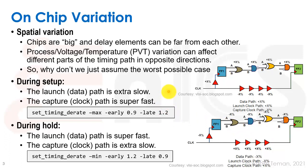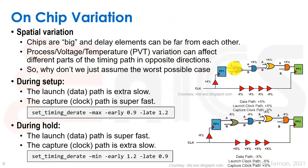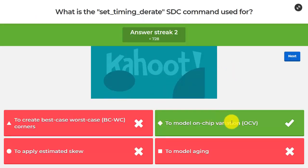That's our basic OCV modeling. We then discussed more advanced models to improve upon it. The problem is that by putting everything into delta margins, the margins can grow so large that we can't improve our chip from one technology generation to the next. So we look for more accurate OCV models to reduce those margins.